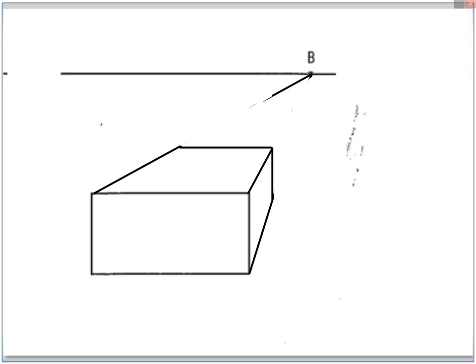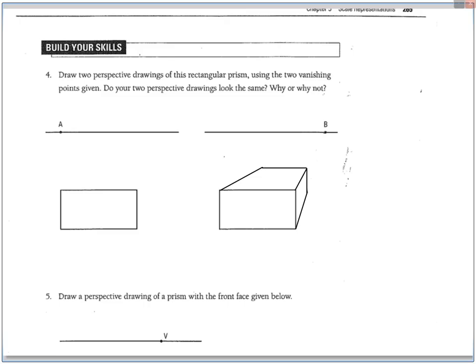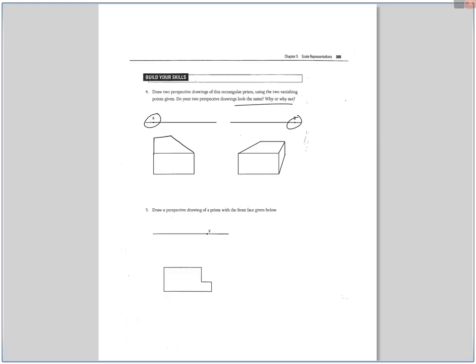So there is a perspective drawing. To answer this question, do your perspective drawings look the same? If you actually did this, you would see that no, they don't look the same because they have different vanishing points. If you have a different vanishing point, it's going to look different.